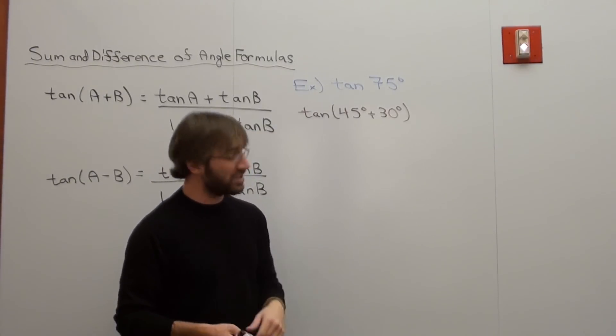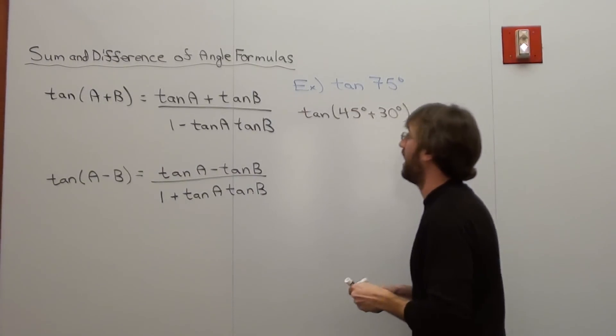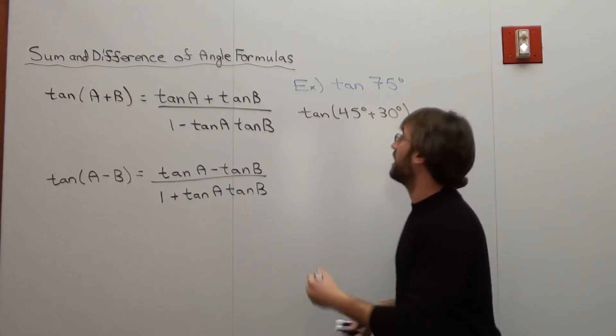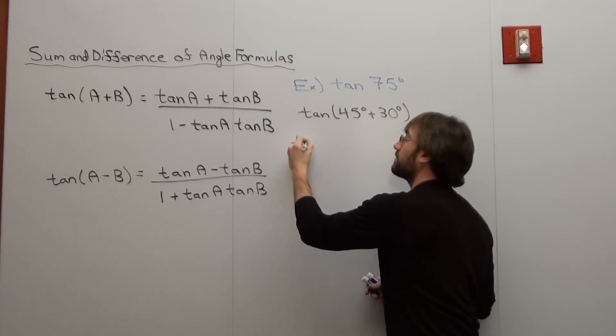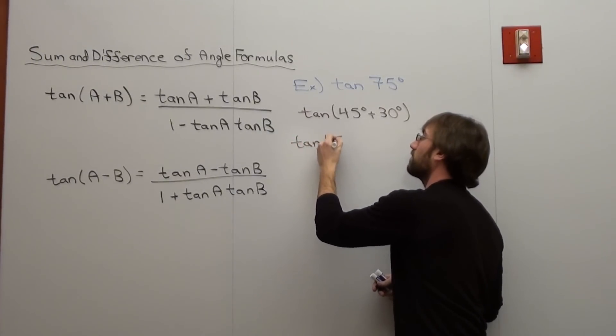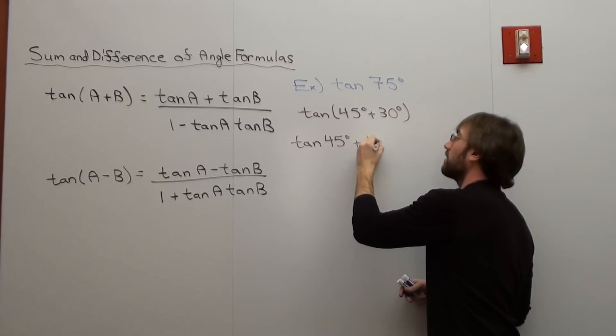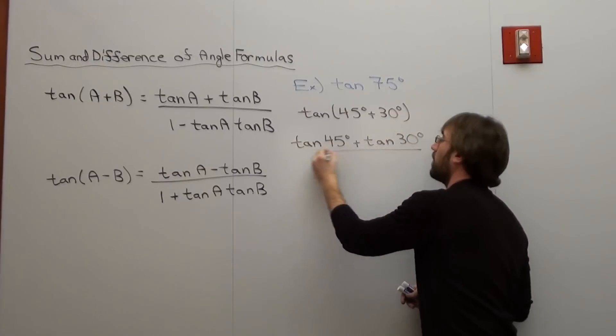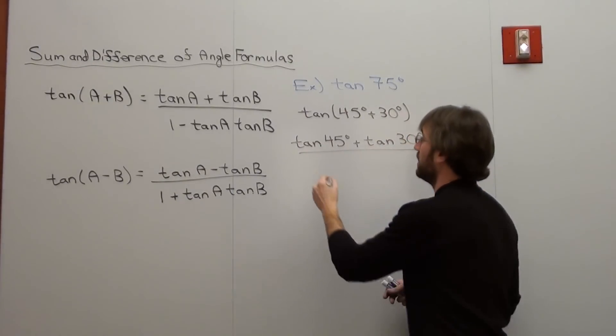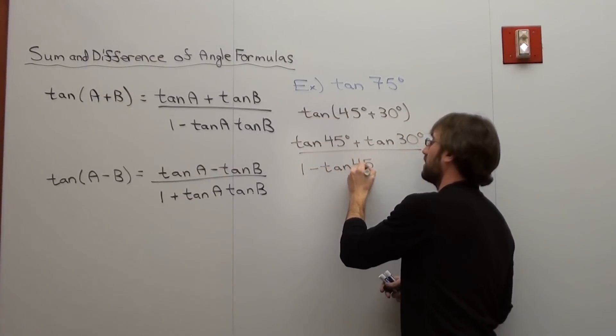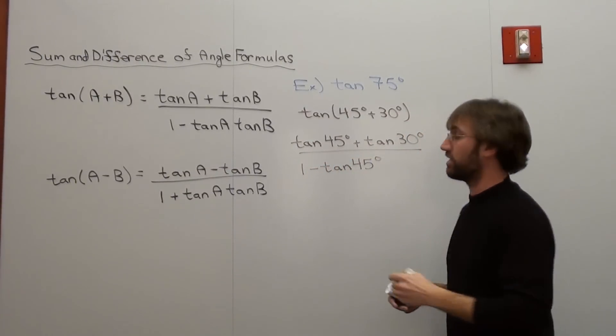I've got the tangent of 45 plus the tangent of 30, and I can rewrite that as, well, that's a sum, so I'm going to use this one. Tangent of 45 plus tangent of 30, all divided by 1 subtracted by tangent of 45 tangent of 30.